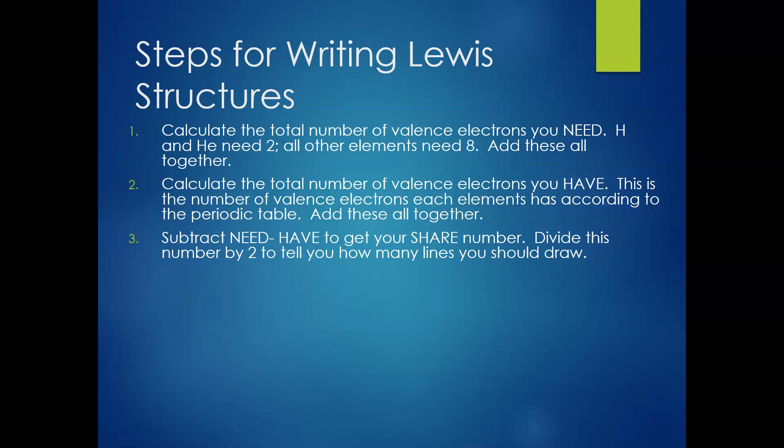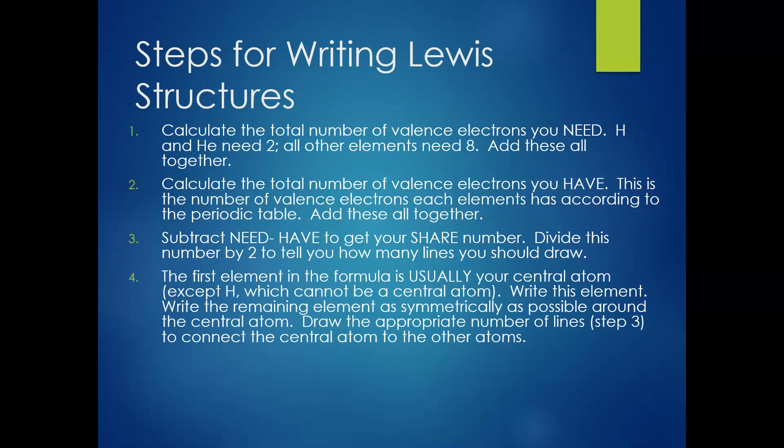The share number is the number of electrons that are going to be shared between those elements. You divide that share number by two because each line in a Lewis structure represents two electrons, and that tells you how many lines to draw. Then you look at your formula and figure out which atom is going to be your central atom.